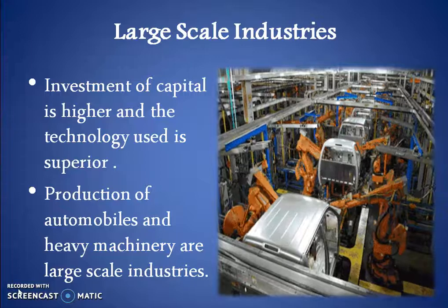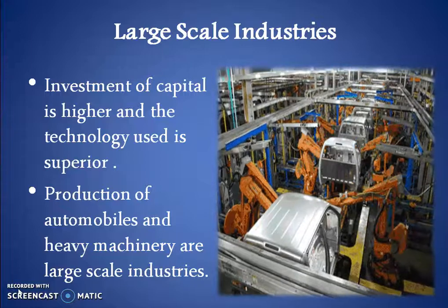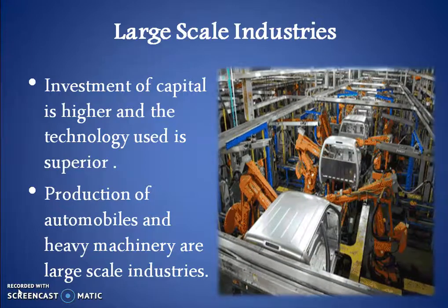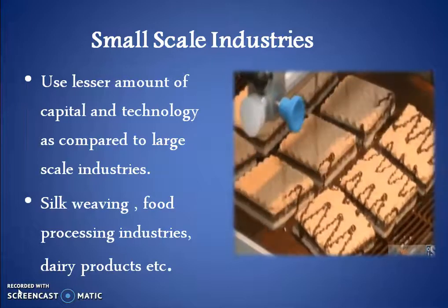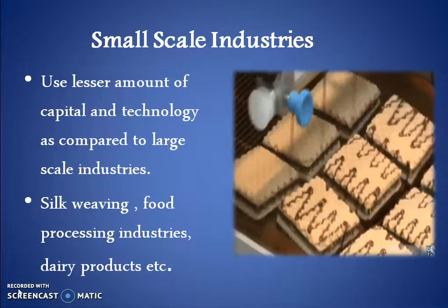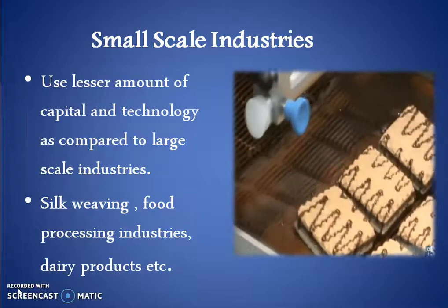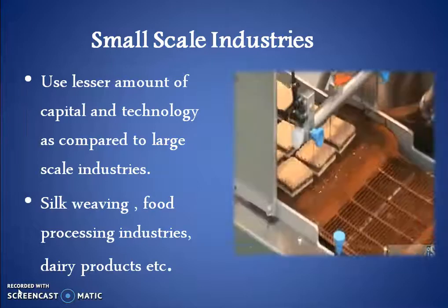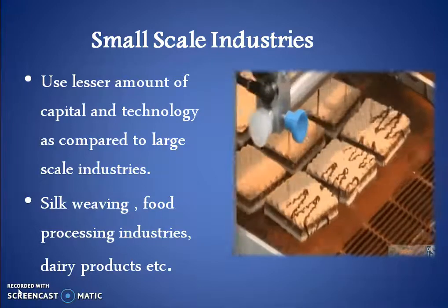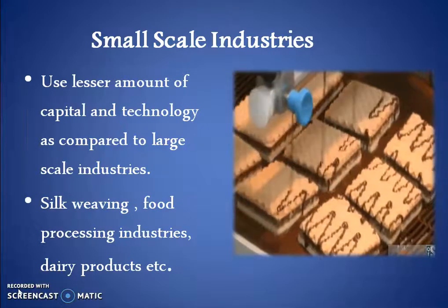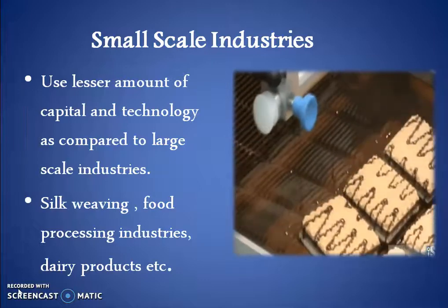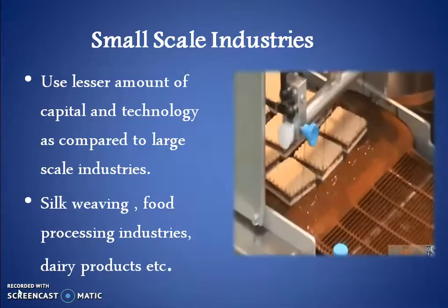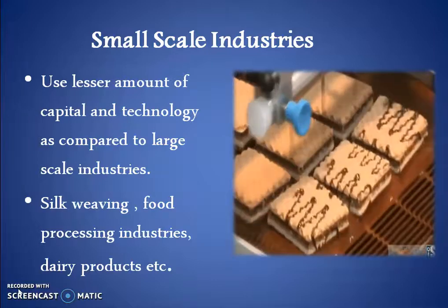For example, production of automobiles and heavy machinery are the large-scale industries. Second, small-scale industries. These type of industries use a lesser amount of capital and technology as compared to large-scale industries. Few examples are silk weaving, food processing industries, dairy products, etc.